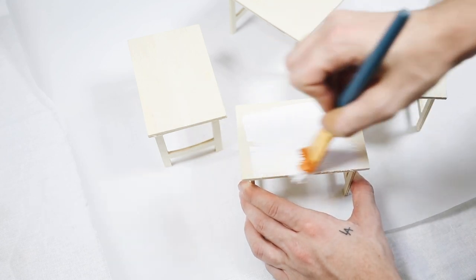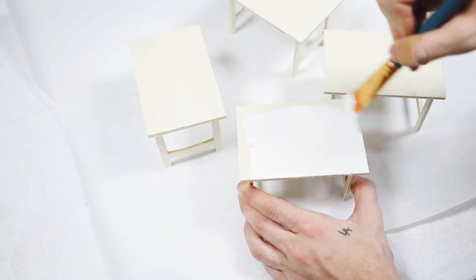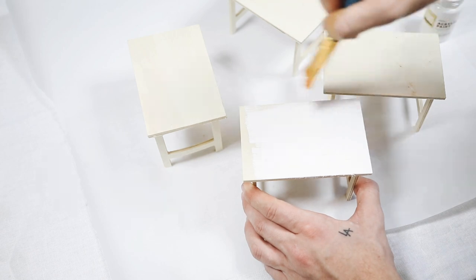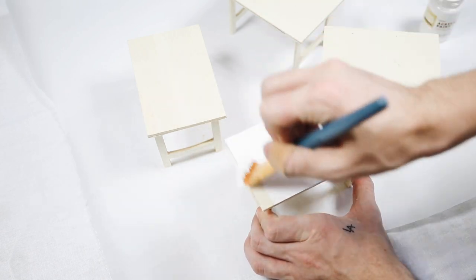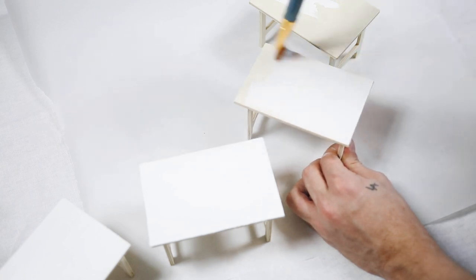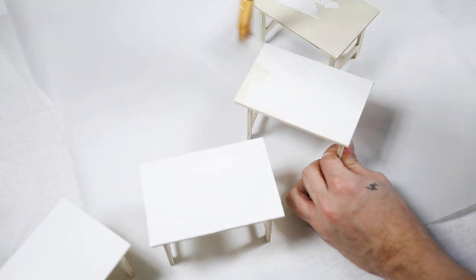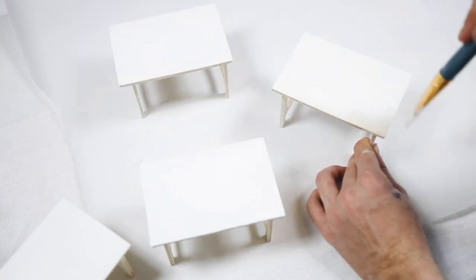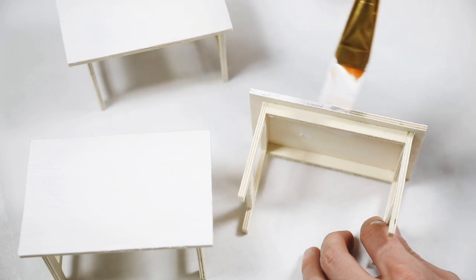And I do want to mention that the Target brand white paint is actually so good. As you can see, it gets such a nice coat. I did one coat on these entire little tables here and it really gave them a full opaque white coat. So if you're looking for a good white paint, check out Target and their little craft section area. The white paint there is really nice.